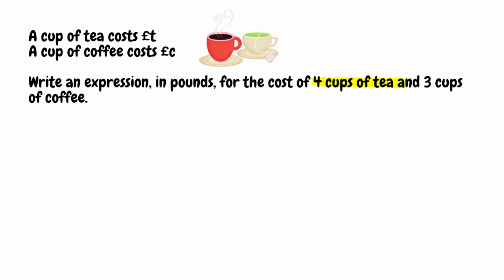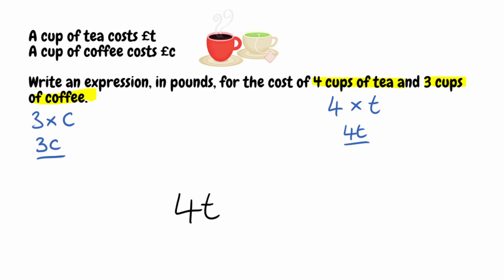Let's look at the four cups of tea first. We would do four multiplied by the cost of a single cup of tea. Here we're given the variable t, so we'd do four multiplied by t, which is just 4t. Then for three cups of coffee, it would simply be three multiplied by the cost of a single cup of coffee, which is c. So three times c simplifies to 3c. The teas cost 4t in total and the coffees cost 3c in total, so for four cups of tea and three cups of coffee, we add these together. The final expression is 4t plus 3c.